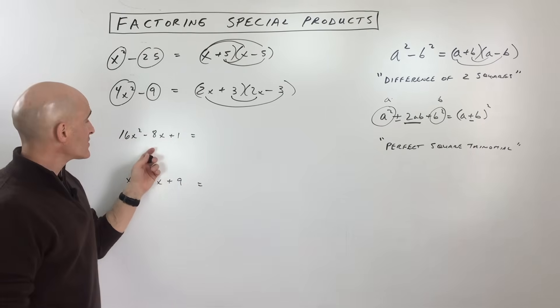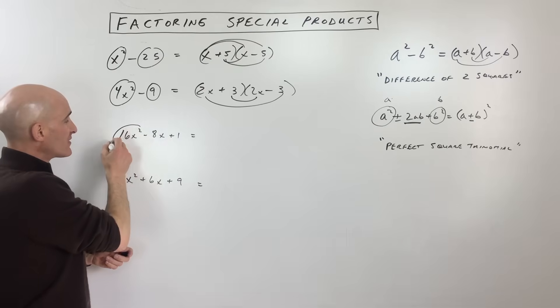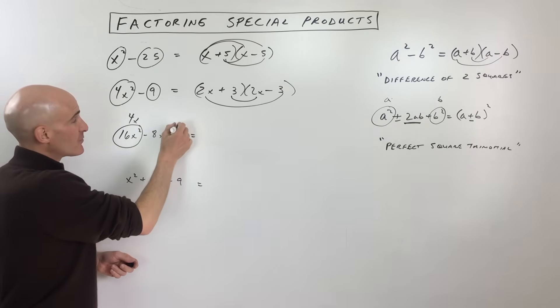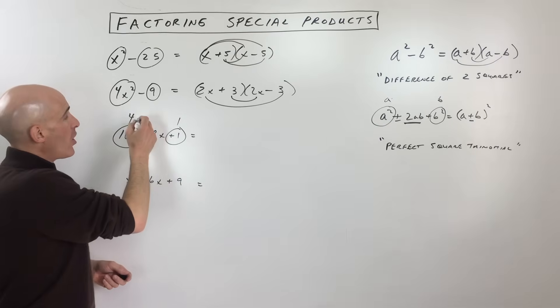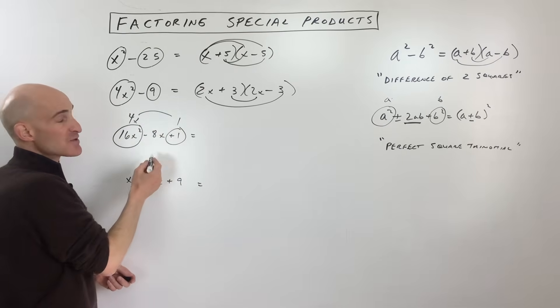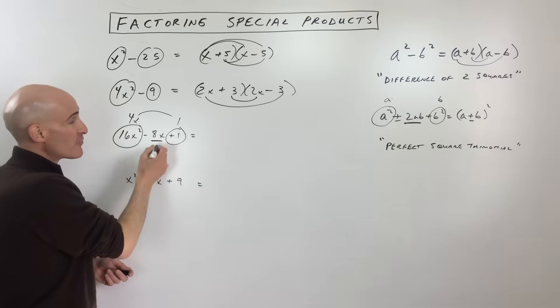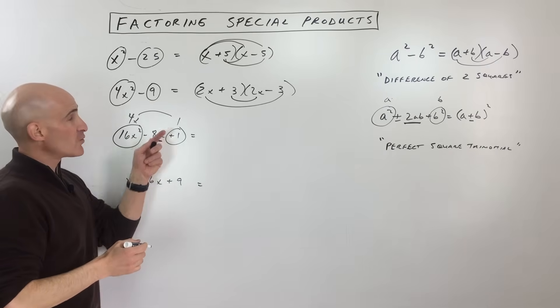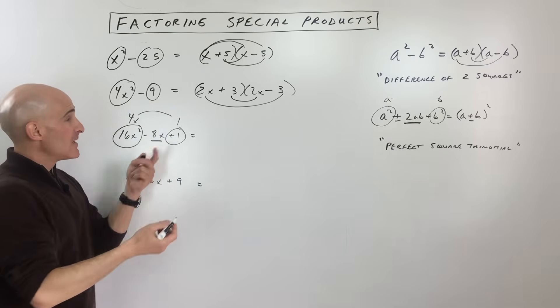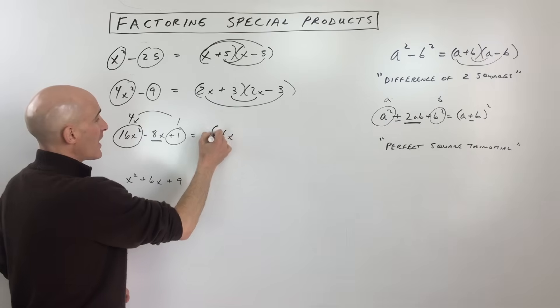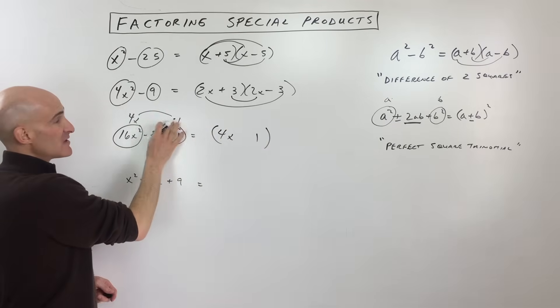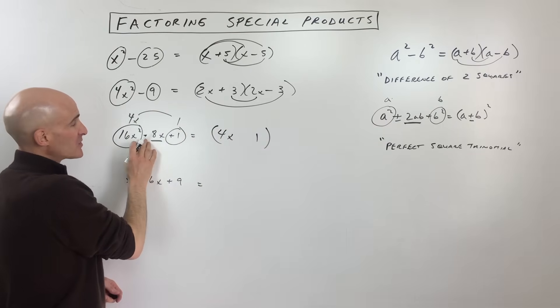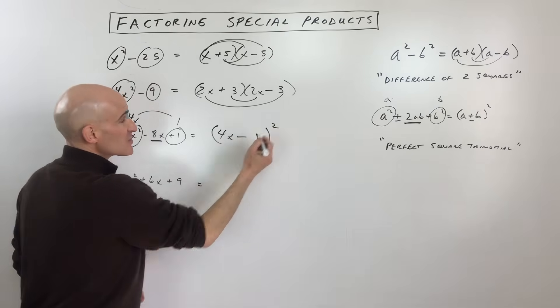Going over to perfect square trinomials, notice that the first term is a perfect square: 4x times itself is 16x², and this is a perfect square: 1 times itself is 1. Take 4x times 1 doubled to make sure it matches the middle term. So 4x times 1 is 4x, doubled is 8x. When we factor, this is going to be (4x - 1)².